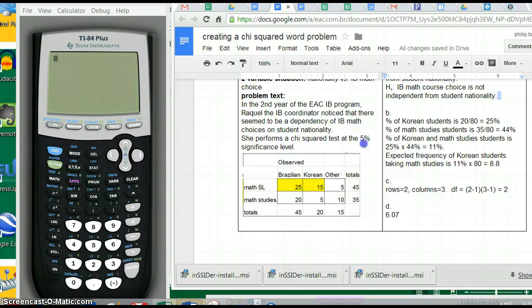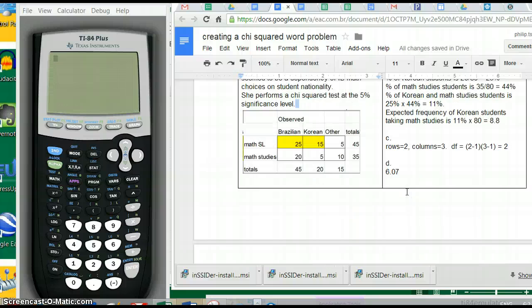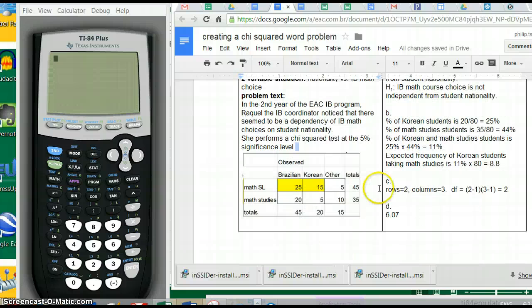The second question asks to show that the expected frequency for Korean students taking math studies is 8.75. Korean students taking math studies corresponds to this cell, where the observed frequency was 5. But what if it was truly independent distribution? What should this be? This should be around 8.8.